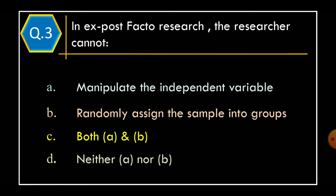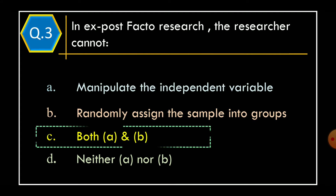Question 3. In ex-post facto research, the researcher cannot: Option A, manipulate the independent variable; Option B, randomly assign the sample into groups; Option C, both Option A and B; Option D, neither Option A nor Option B. The correct option is Option C, both Option A and B.